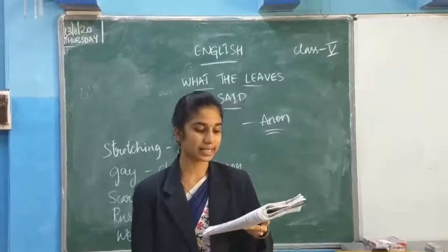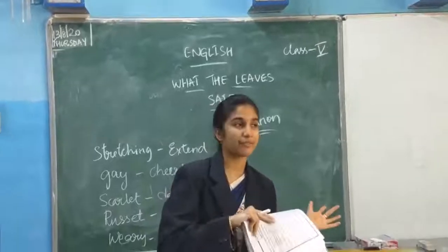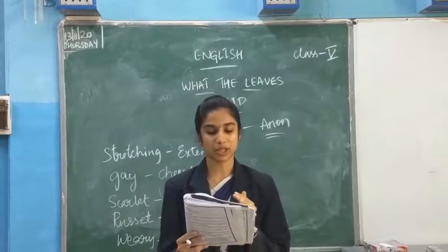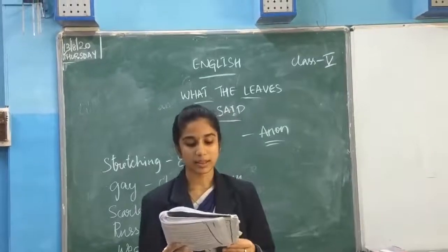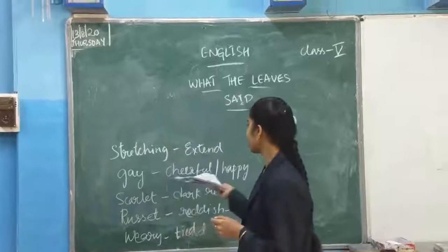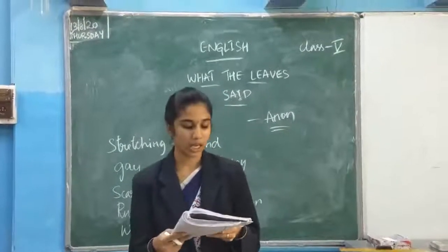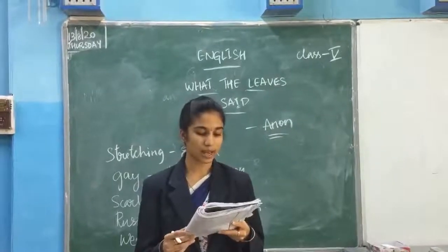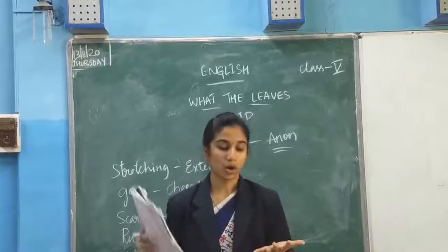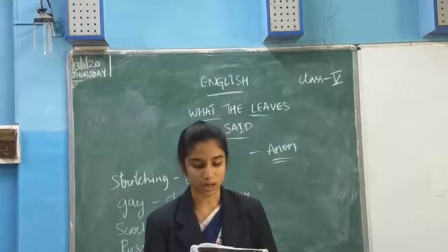The Leaves said it is Autumn. The leaves are telling Autumn means after summer, this Autumn season will be coming. Aren't we all happy? Scarlet and golden and russet were they. The leaves will be turning into a dark red colour, golden colour, or reddish brown colour.